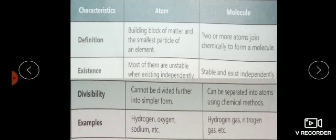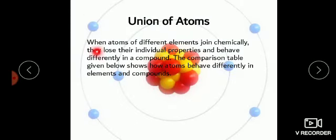When atoms of different elements join chemically, they lose their individual properties and behave differently in a compound. For example, sodium atom jab chloride atom ke saath combine hoga toh uski apni properties khatam ho jaengi. The comparison table given below shows how atoms behave differently in an element and a compound.